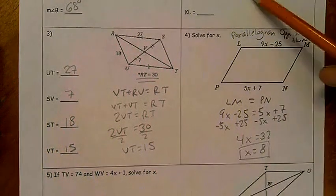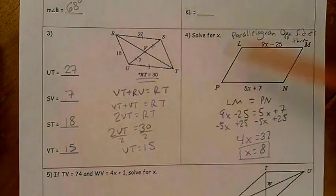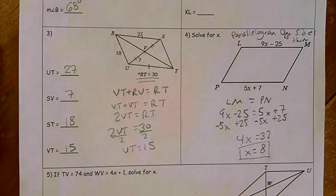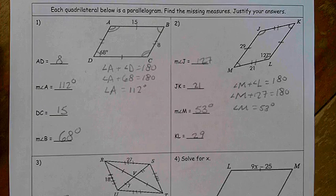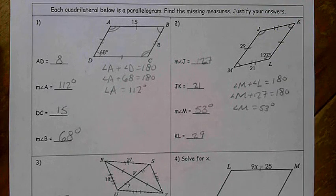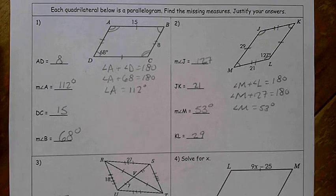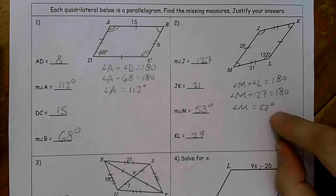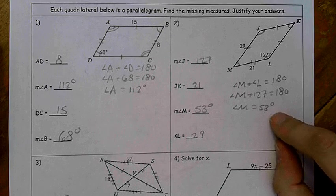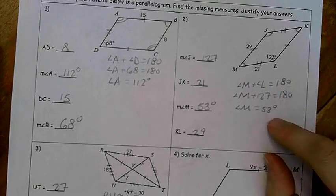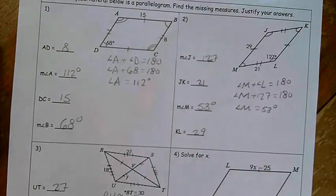I want you guys to try number 2 and 5. Try number 2 and 5, we'll go over the answers in just a minute. I hope you paused the video and now you've clicked play. For number 2, angle J measures 127. The length of JK is 21. Angle M measures 53 degrees, as you can see here. Because we knew angle L, I plugged it into my supplementary. Because angle M and L add to 180, so you get 53. And then KL is 29.